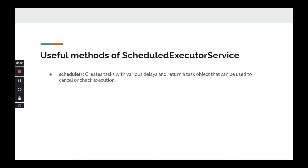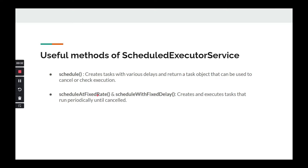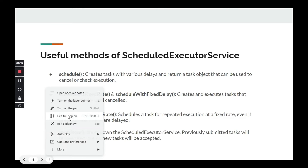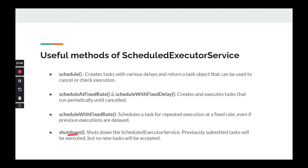What are the useful methods of ScheduledExecutorService? First, the schedule method — we'll see a code demo — which is helpful to create a task with a delay. Then scheduleAtFixedRate and scheduleWithFixedDelay, which we'll also demo. ScheduleAtFixedRate is used for repeated execution at a fixed rate, even if previous executions are delayed. Finally, there is the shutdown method, which shuts down the ScheduledExecutorService — previously submitted tasks will be executed, but no new tasks will be accepted.